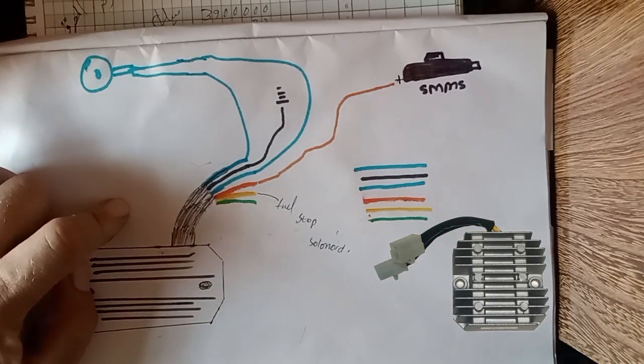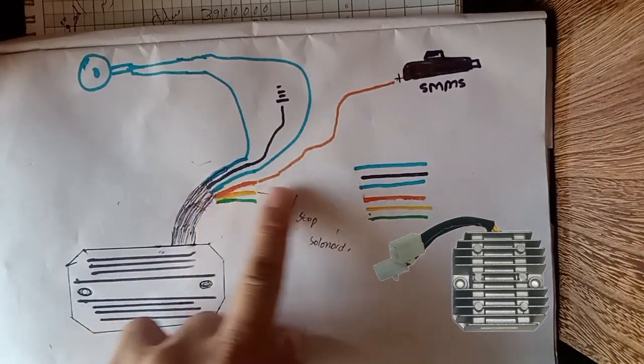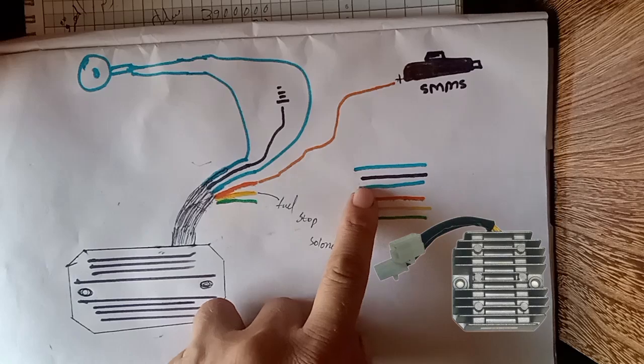You can see the wire colors: blue wire, black wire, blue wire, red wire, yellow, and green. Let's explain each one. First of all, these two blue wires.